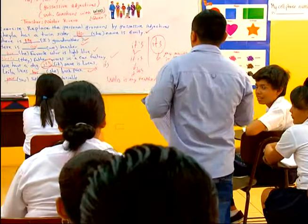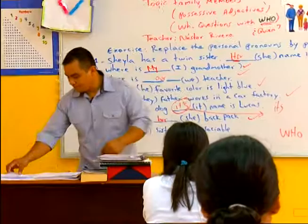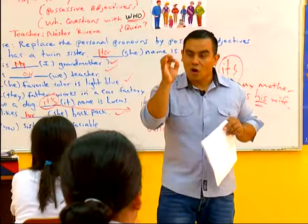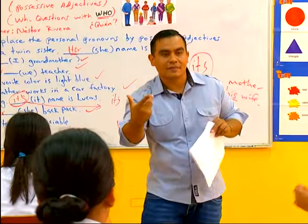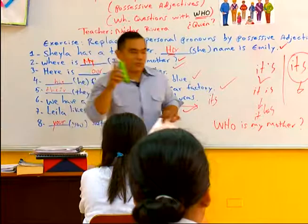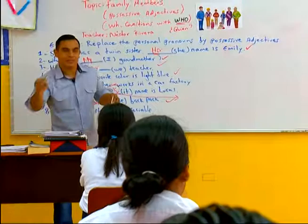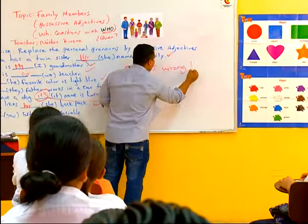Now I'm going to read five sentences out loud. You have to tell me if they are wrong or right, and tell me the correct form. Si está mala, todos me tienen que decir: that's wrong. That's wrong. Y si estuviera mala mi oración, me dicen cuál es la corrección. Si está correcta, solamente aplauden.